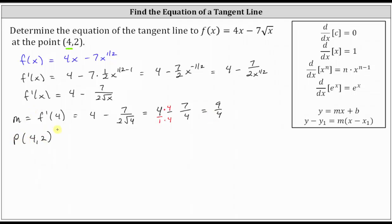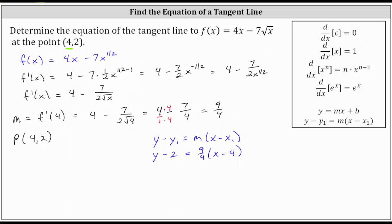We can find the equation of the tangent line using point-slope form or slope-intercept form. Using the point-slope form of a line — y minus y1 equals m times the quantity (x minus x1), where m is the slope and (x1, y1) is any point on the line — we have y minus 2 equals 9/4 times the quantity (x minus 4). This is the equation of the tangent line in point-slope form.